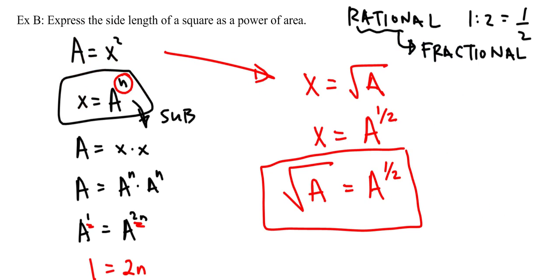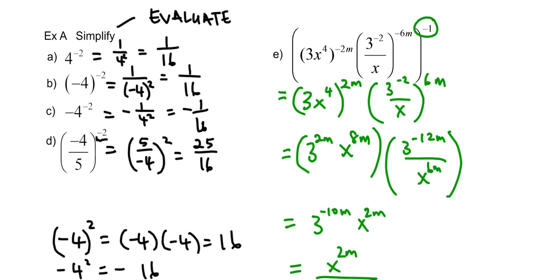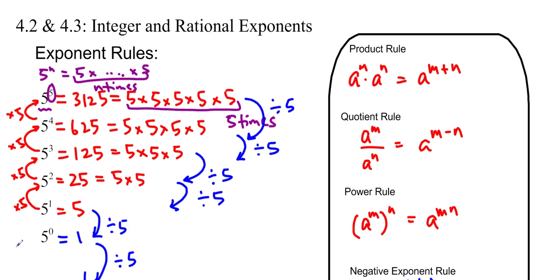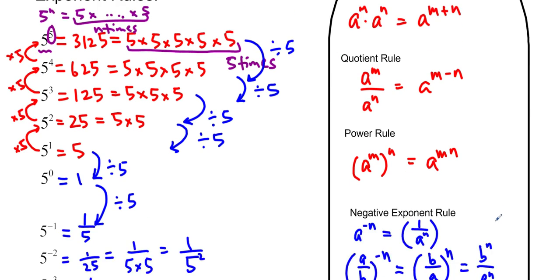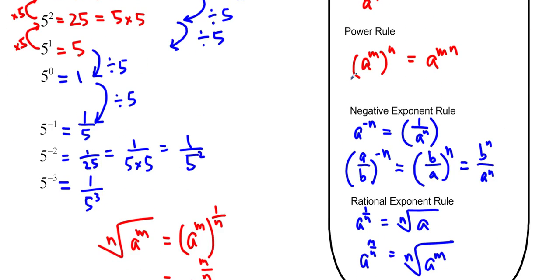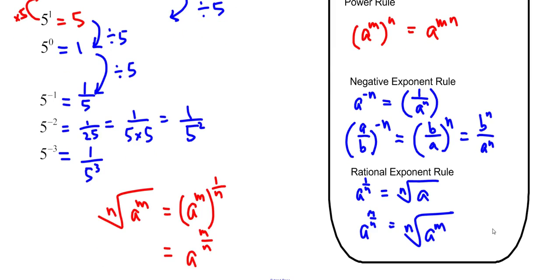Once again, we have our exponent rules: the product rule, the quotient rule, the power rule, the negative exponent rule, and the rational exponent rule. Thanks for watching.